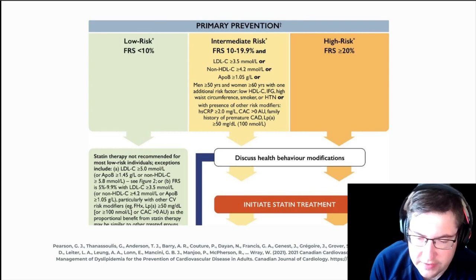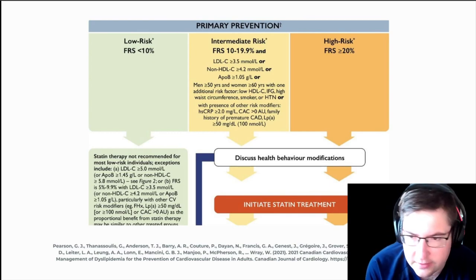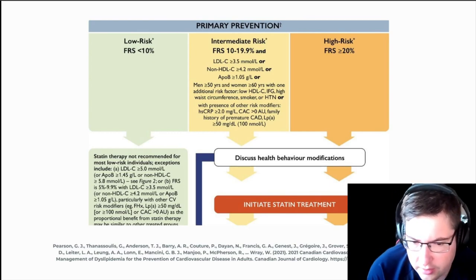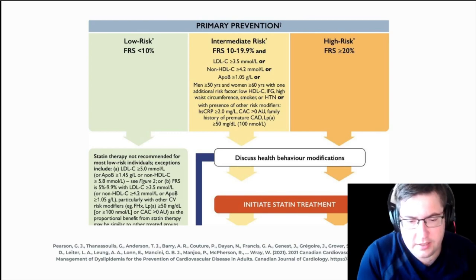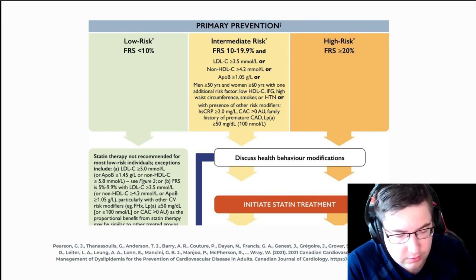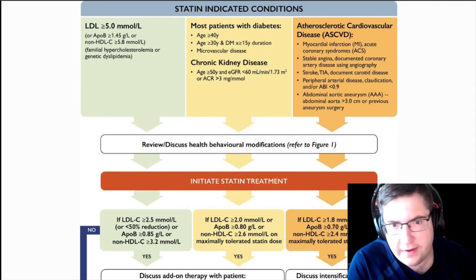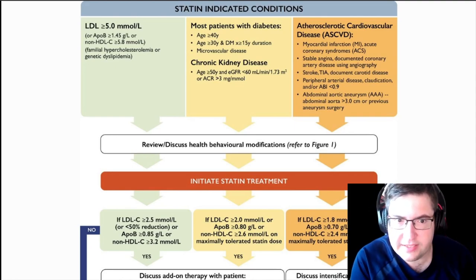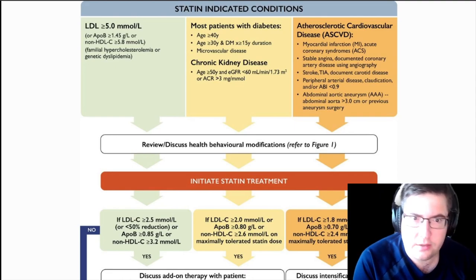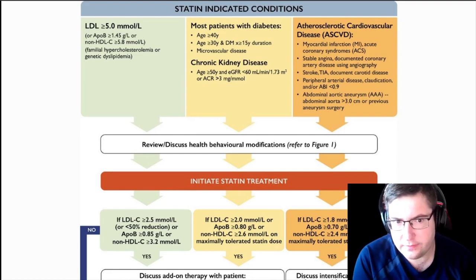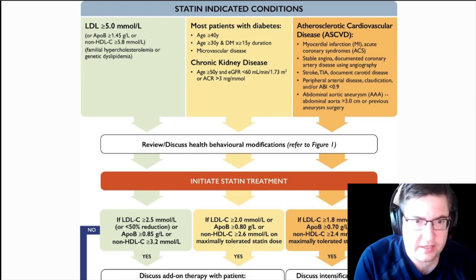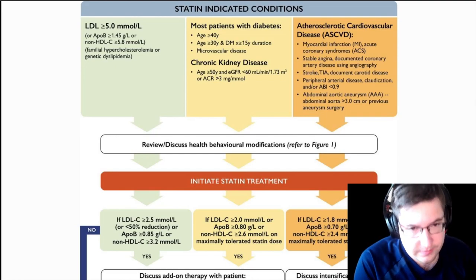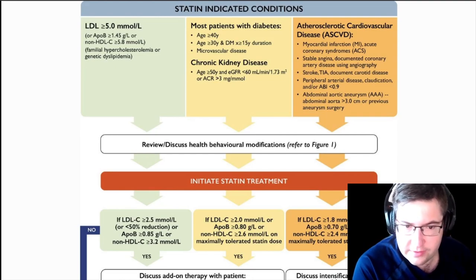These are based on the CCS 2021 dyslipidemia guidelines. If you have a statin-indicated condition such as atherosclerotic cardiovascular disease — meaning you've already had an event like a myocardial infarction, acute coronary syndrome, stable angina, stroke, TIA, peripheral arterial disease, claudication, or an abdominal aortic aneurysm — then you should be on a high-intensity statin. This is known as secondary prevention.